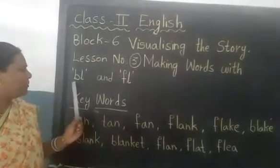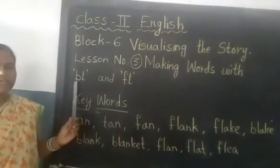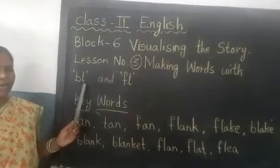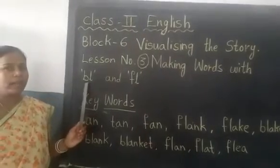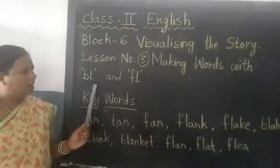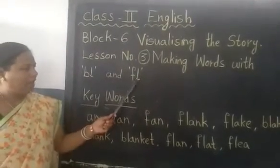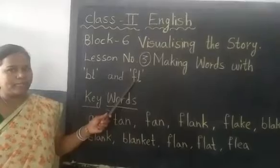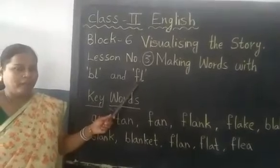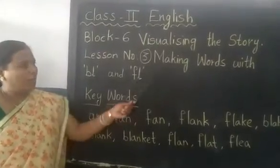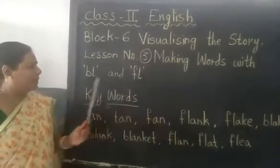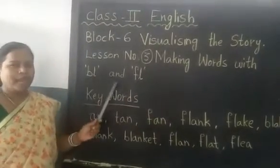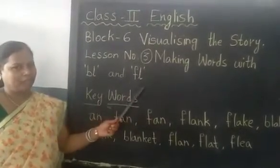So what will we spell when B and L come together? BL. And when F and L letters come together, what will we say? FL. So we are making words with the BL and FL blends.